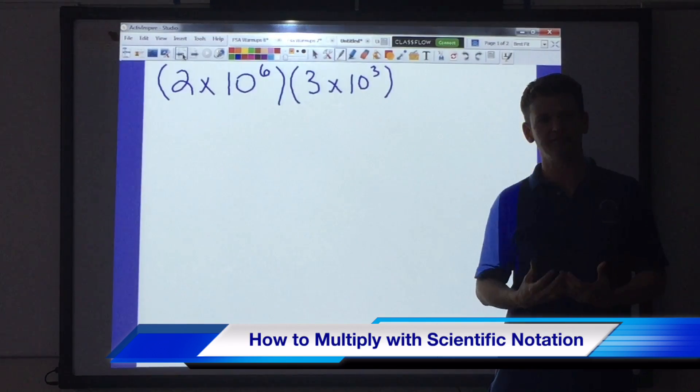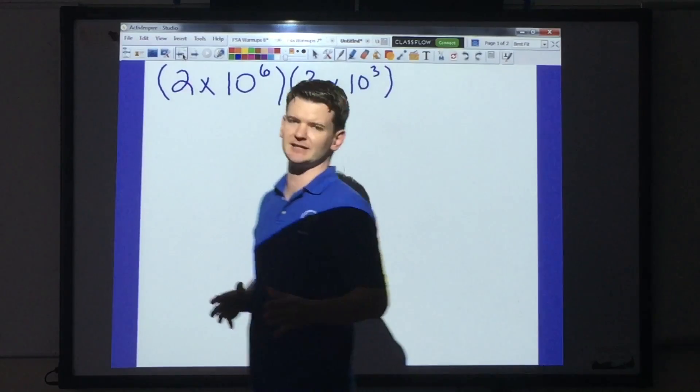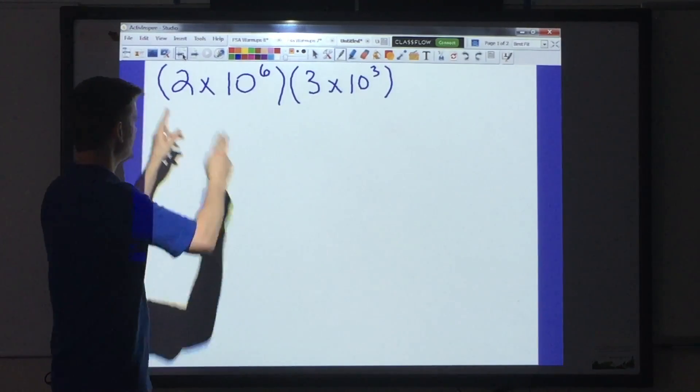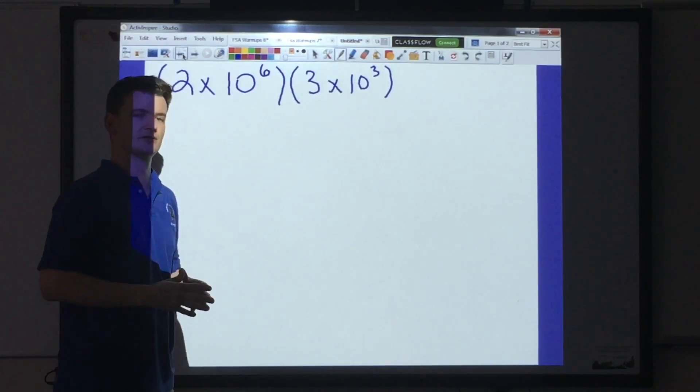This is something that may seem difficult. I'm going to show you just how easy it is. So we have a classic multiplication using scientific notation problem here: 2 times 10 to the 6th times 3 times 10 to the 3rd.